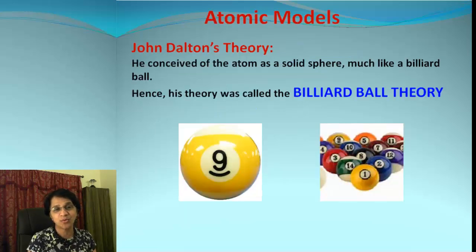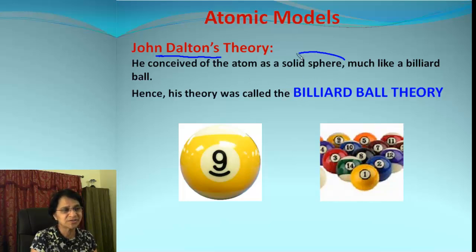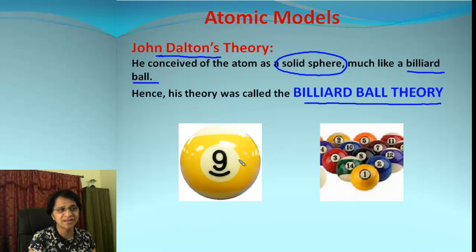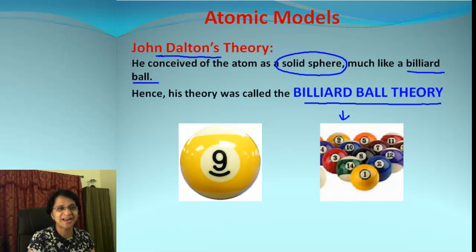The very first scientist to propose an atomic model was John Dalton, and it's called Dalton's theory. Dalton proposed that any atom is like a simple solid sphere, almost similar to a billiard ball — because of that, his theory was called the billiard ball theory. If you consider all the elements giving different atoms, it looks like a cluster of different kinds of atoms.